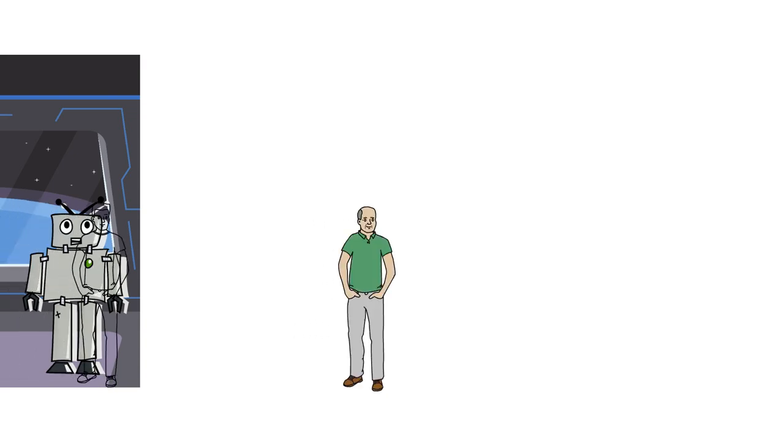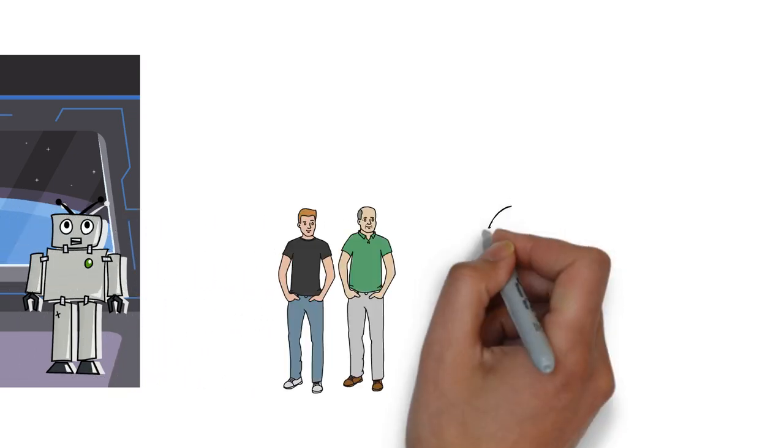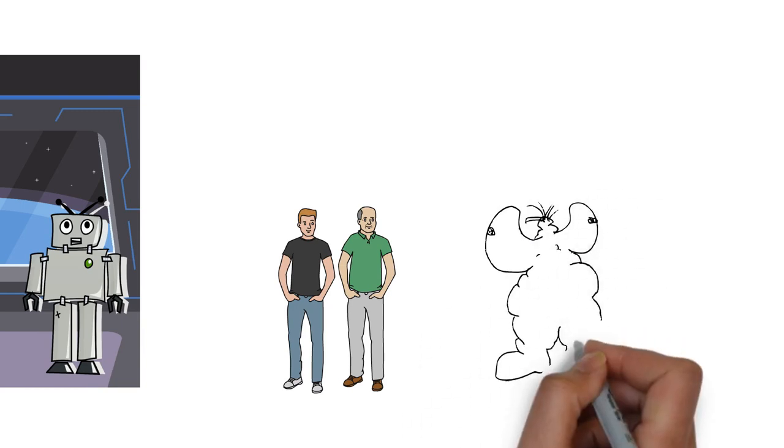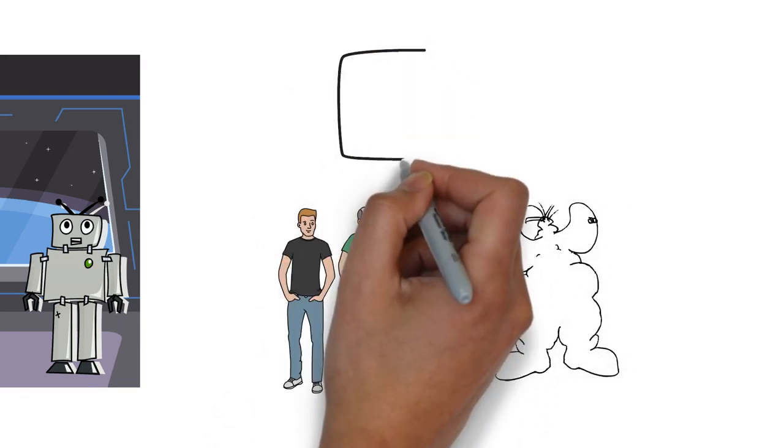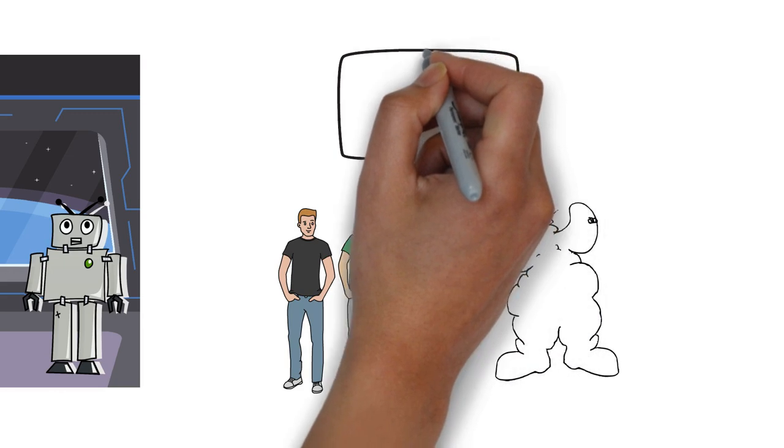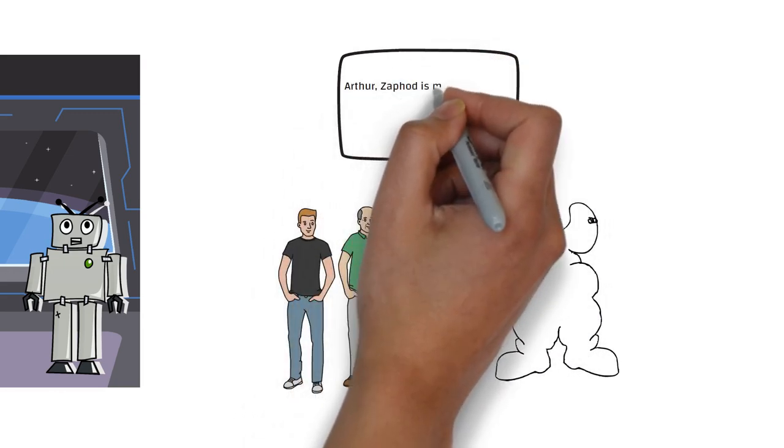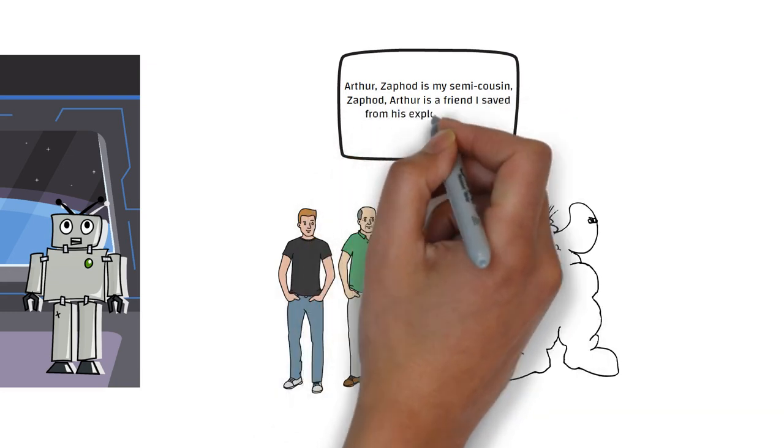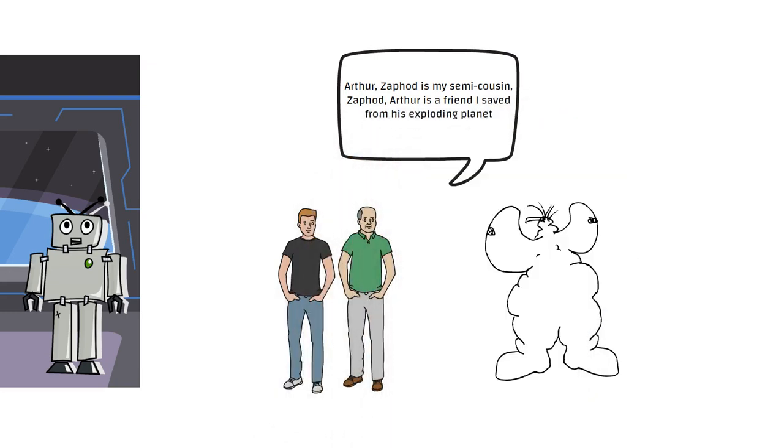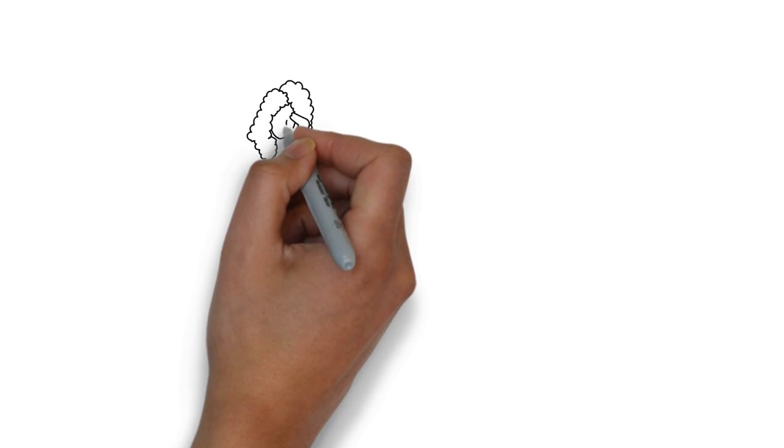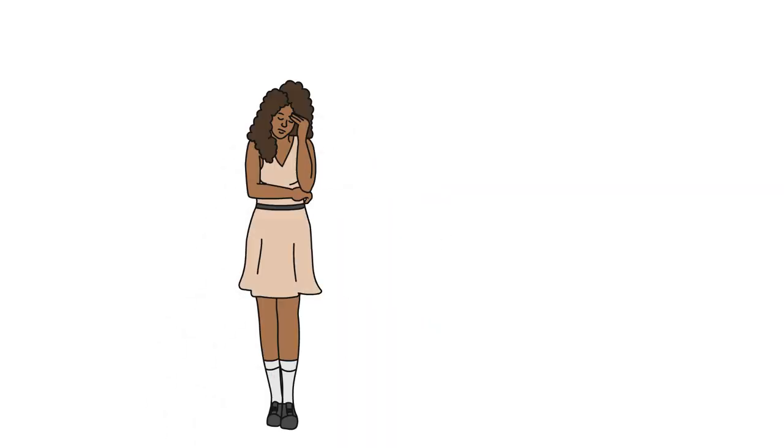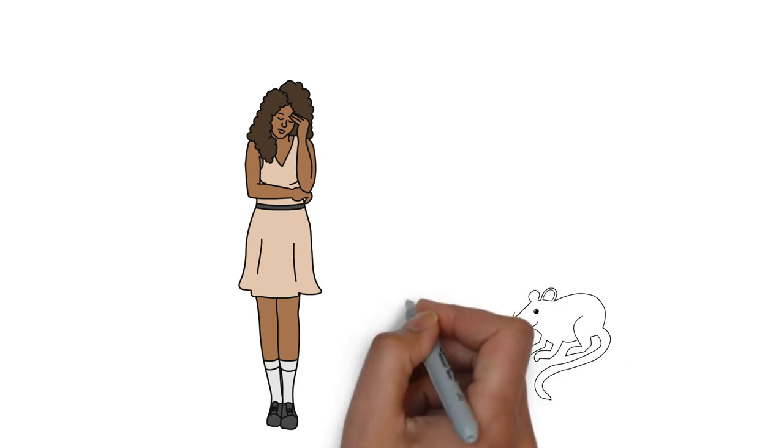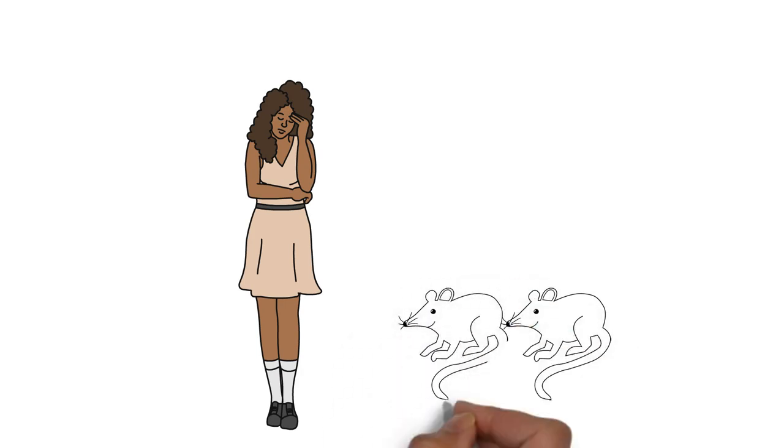When Arthur enters he is shocked by Zaphod's two heads. Ford and Zaphod exchange wary and familiar greetings. Ford tells Arthur that Zaphod is his semi-cousin, and tells Zaphod that Arthur is a friend whom he saved when his planet blew up. That evening Trillian thinks about her surprisingly negative reaction to her planet being destroyed. Her two white mice she brought sit in a cage next to her.